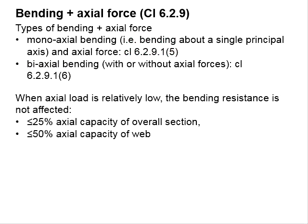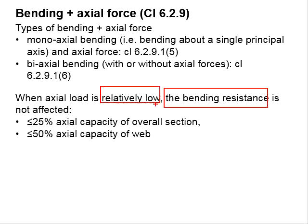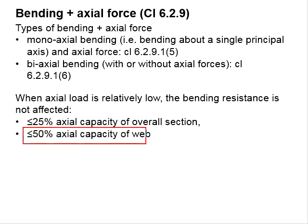In the existence of axial force, the bending strength of the member can be affected. However, the bending resistance is not affected when the axial force is relatively low — defined as less than 25% of the axial capacity of the entire section, or less than 50% of the axial capacity of its web.